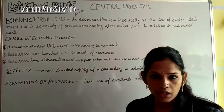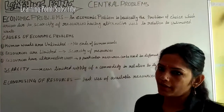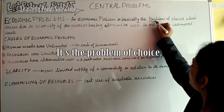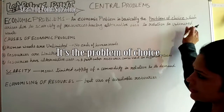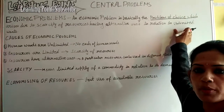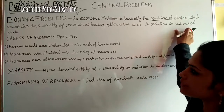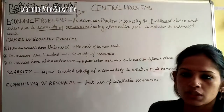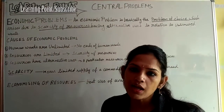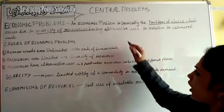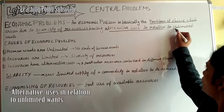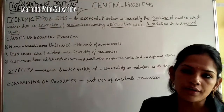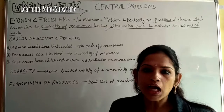If you look at this definition carefully, some main words come out. The problem is basically the problem of choice — meaning the economic problem arises from choice. It arises due to scarcity of resources, meaning resources are limited. Alternative uses in relation to unlimited wants means that limited resources have unlimited alternative uses.